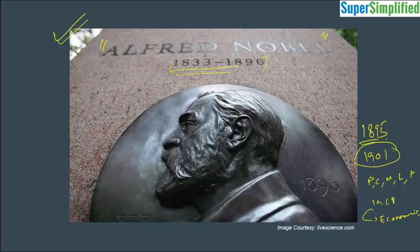Just for general knowledge, who was the first Indian to receive a Nobel Prize? He was Rabindranath Tagore in the year 1913 for Gitanjali. And who is the most recent recipient? Indian Kailash Satyarthi, Nobel Peace Prize 2014, who shared it with Malala from Pakistan.